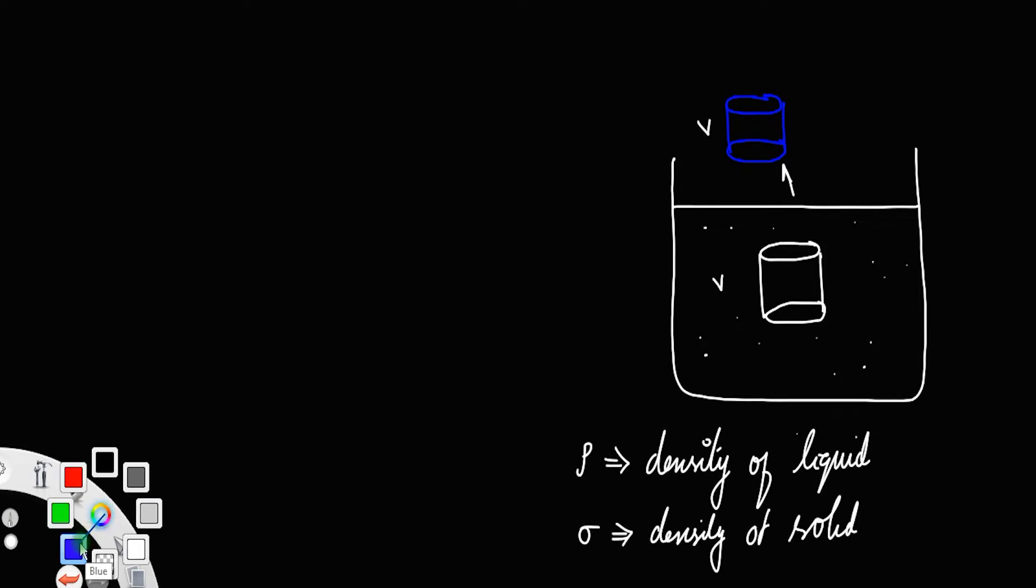From the Archimedes principle, we know that there is an upthrust acting, a buoyant force or the resultant upthrust acting on the body. That resultant upthrust is actually the resultant of these two forces: the force on the upper side and the force on the lower side. The resultant of these two forces is the resultant upthrust.